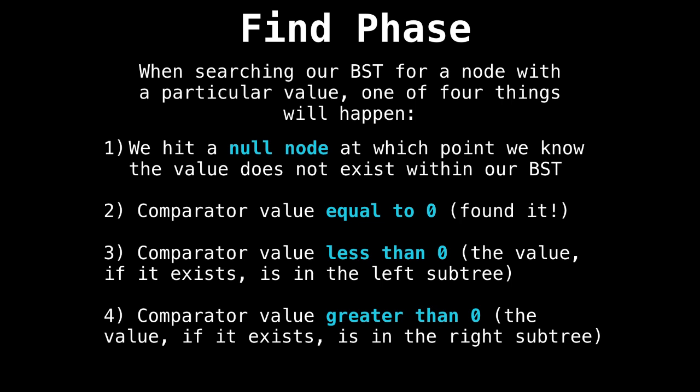More details on the find phase: this is when we're searching for the element in the tree to see if it exists, and basically four things can happen. First, we hit a null node, in which case we know the value we're looking for doesn't exist. Our comparator returns zero, meaning we found the node we want to remove. The comparator value is less than zero, so the value if it exists is in the left subtree, or the comparator value is greater than zero, in which case the value if it exists is in the right subtree.